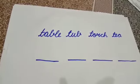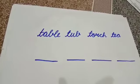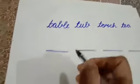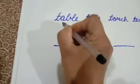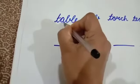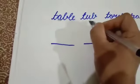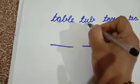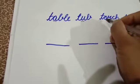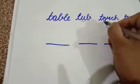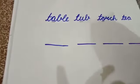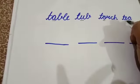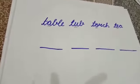We sort them by looking at the second letter of that word. In the word table, the second letter is A. In the word tub, the second letter is U. In the word torch, the second letter is O. And in the word tea, the second letter is E.